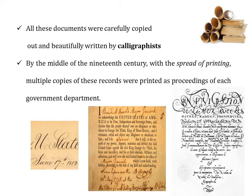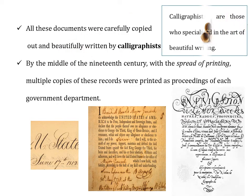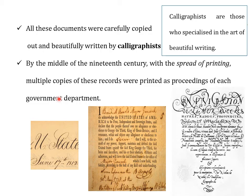All these documents were carefully copied and beautifully written by calligraphists — people who are specialized in the art of beautiful writing. By the middle of the 19th century, with the spread of printing, multiple copies of these records were printed as proceedings of each government department. Hence, all these records were preserved properly.